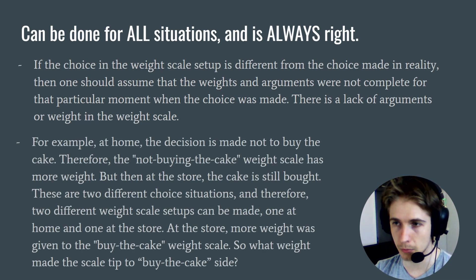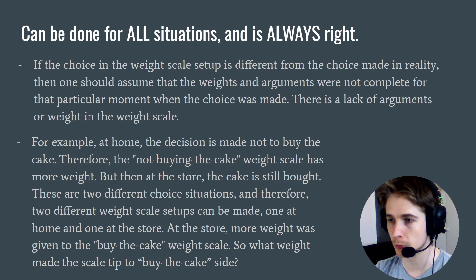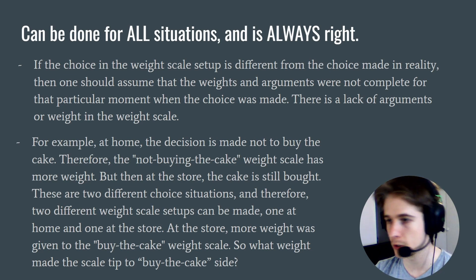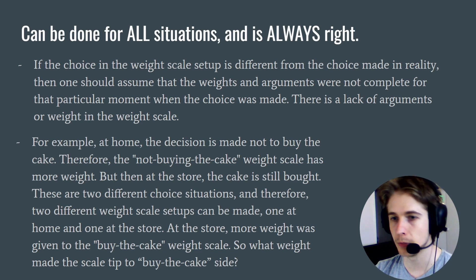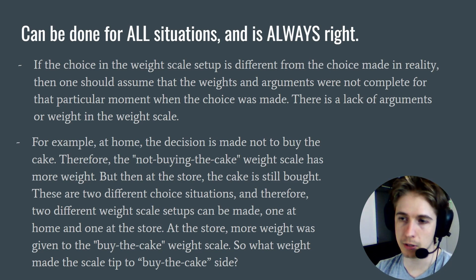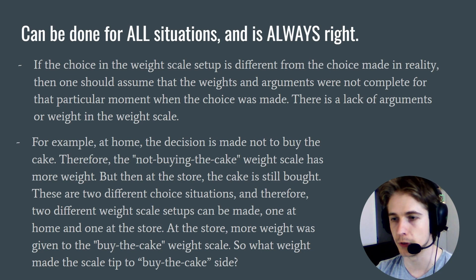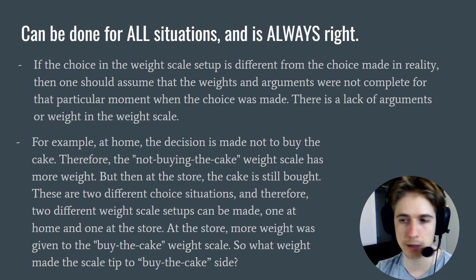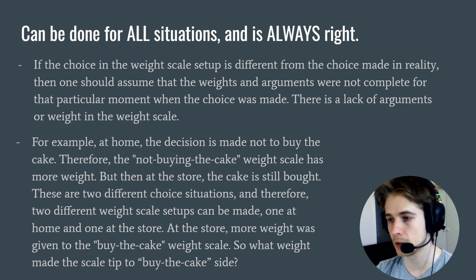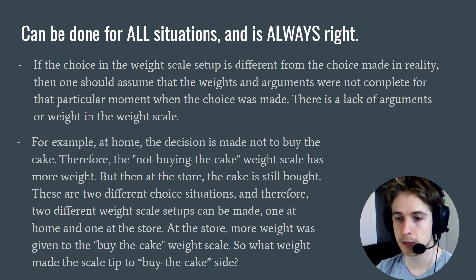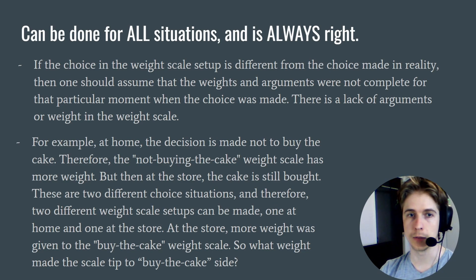For example, at home the decision is made not to buy the cake, so the not-buying-the-cake side of the scale has more weight. But then at the store the cake is still bought. These are two different choice situations and therefore two different weight scale setups can be made — one at home and one at the store. At the store, more weight was given to the buy-the-cake side. So what weight made the scale tip to the buy-the-cake side?